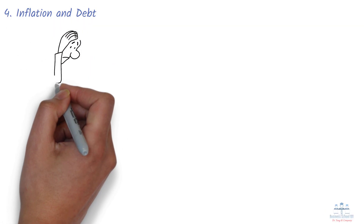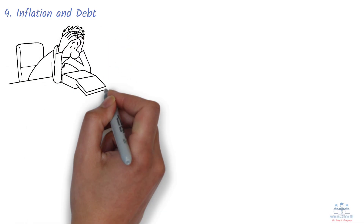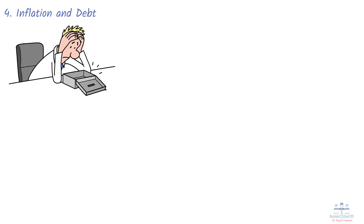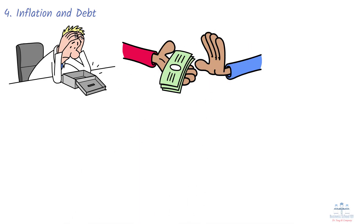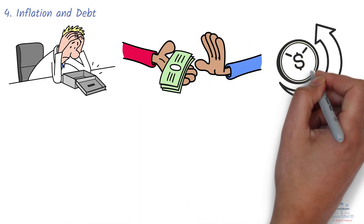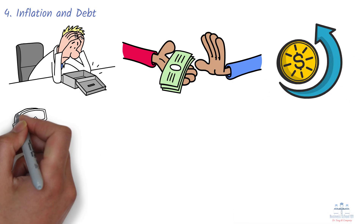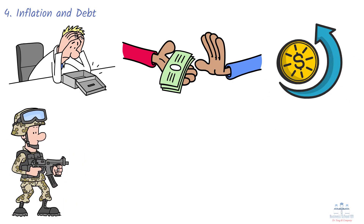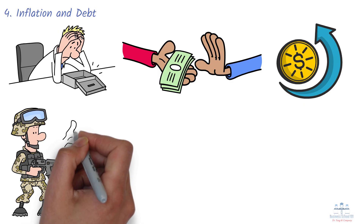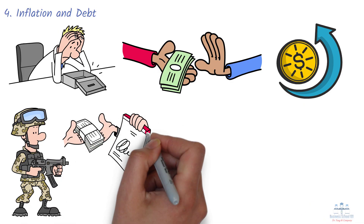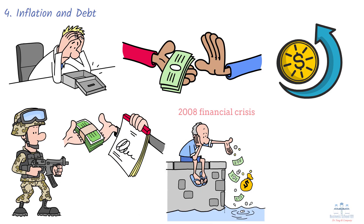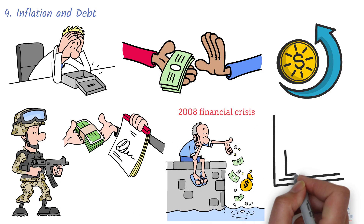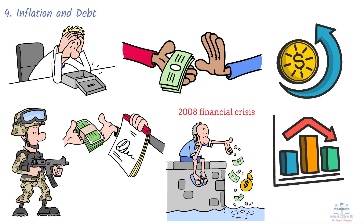When governments face rising debt or inflation, they may consider adjusting tax rates to control the economy. Higher taxes can help reduce inflation by limiting consumer spending, while lower taxes can stimulate spending in times of economic downturns. For example, after World War II many countries including the U.S. increased taxes to pay off war debts and fund rebuilding efforts. Conversely, during the 2008 financial crisis, many governments reduced taxes temporarily to stimulate spending.